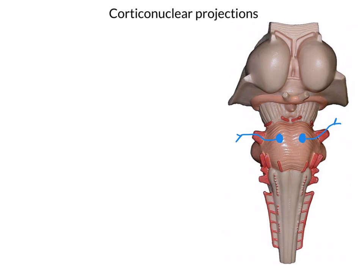To control these lower motor neurons, there are corresponding upper motor neurons descending from the brain. These upper motor neurons come down from the cerebral cortex, from the motor cortex. They may cross the midline and they synapse upon the cranial nerve motor nuclei to control them. So the cranial nerves are no different from spinal nerves in that they contain lower motor neurons which are themselves controlled by upper motor neurons. In the rest of this video we'll look at a selection of these motor cranial nerves and the pattern of projections coming down from the brain.